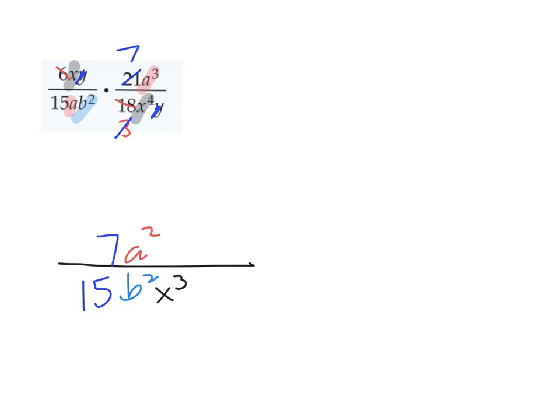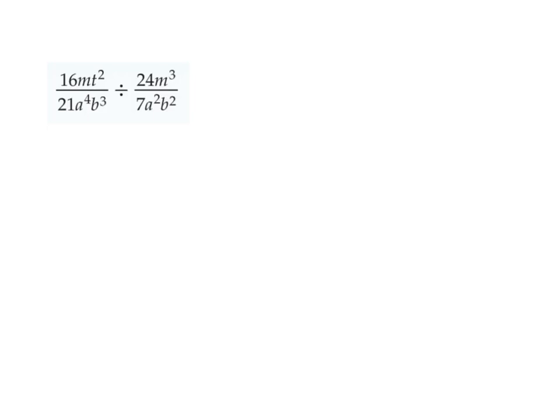Next problem is going to be a little more complicated. It's going to be a division problem. So, right away, you see that. You go, alright. Keep change flip. Let's turn this into a multiplication problem. And, go ahead and work through that one. Alright. I'm going to use the same strategy. I'm going to deal with the variables first. I've got a to the 4th. And, I've got a squared. And, so, I've got. It means I have a squared on the bottom. In this problem, I have a b to the 3rd on the bottom. And, a b squared on the top. So, I'm going to have a b on the bottom.